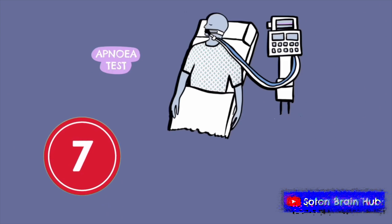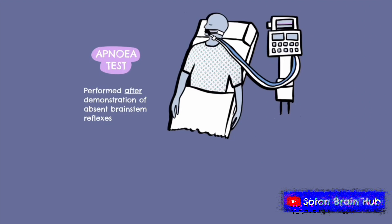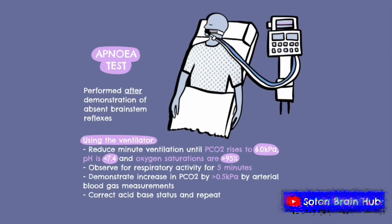The final test is the apnea test, and this should only be performed after demonstration of the absence of the other six brainstem reflexes. This test aims to demonstrate brainstem death by showing a lack of respiratory response to an acidemic stimulus. This is typically done by reducing minute ventilation using the ventilator so that the partial pressure of carbon dioxide rises to 6 kilopascals, pH is less than 7.4, but oxygen saturations maintain at over 95%. Normally this would stimulate respiratory efforts, but in brainstem death there will be no respiratory activity, causing a rise in the partial pressure of carbon dioxide of over 0.5 kilopascals from the start of the test.